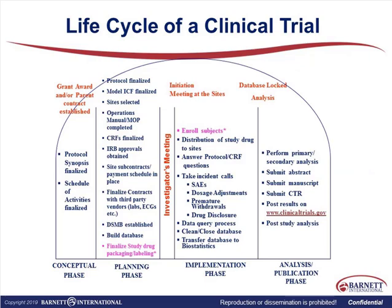In overview, the life cycle of a clinical trial consists of a conceptual phase, which includes the protocol synopsis, which should be finalized at this stage. The schedule of activities needs to be finalized, and essentially you're getting ready to grant the award or contract to participating sites. The next phase, commonly referred to as the planning phase, is where you have a full flash protocol developed, not just a synopsis.